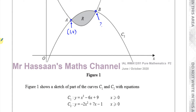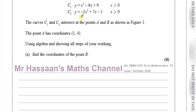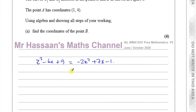Points A and B are where these two graphs intersect. To find where two graphs intersect, we solve the equations simultaneously. We replace y in one equation with what y equals in the other, giving x cubed minus 6x plus 9 equals minus 2x squared plus 7x minus 1. Rearranging to equal zero gives x cubed plus 2x squared minus 13x plus 10 equals 0.